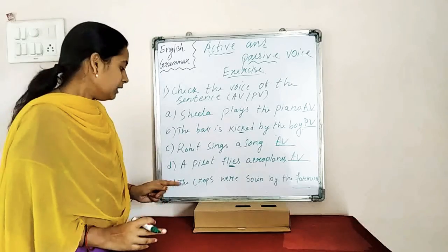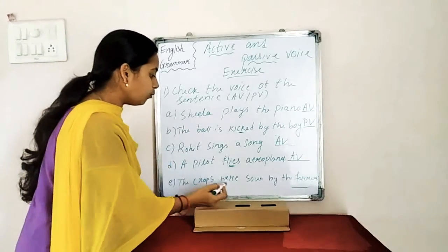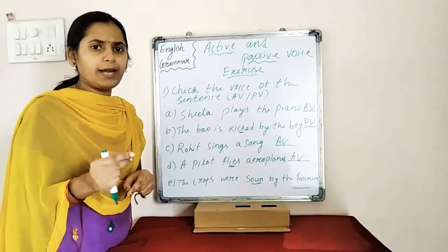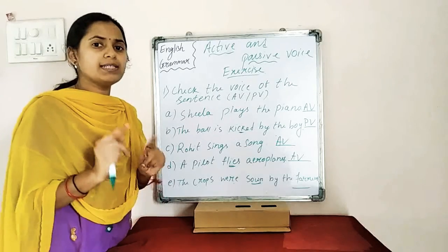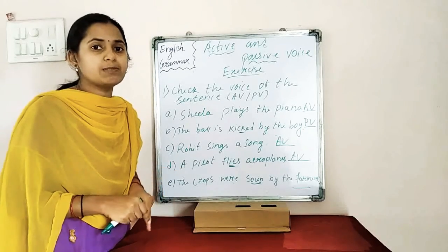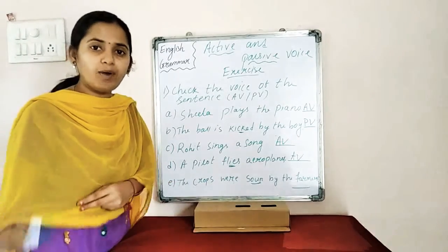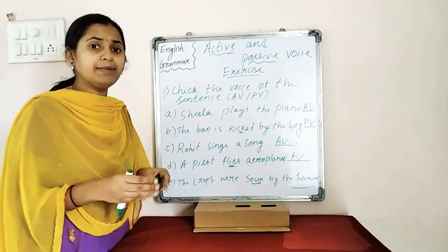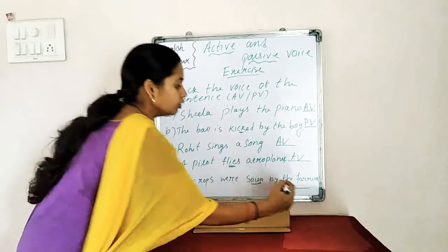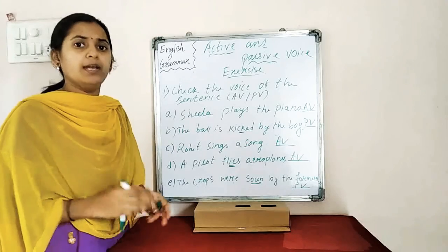Moving to the last one: The crops were sown by the farmers. 'Sown' — S-O-W — is the V-3 past participle form of the verb 'sow,' meaning putting seeds in the soil. So the crops were sown by the farmers — the farmer is the subject here, and the farmer receives the action. That is why this is in the passive voice. We write P-V. Hope you understood this one.